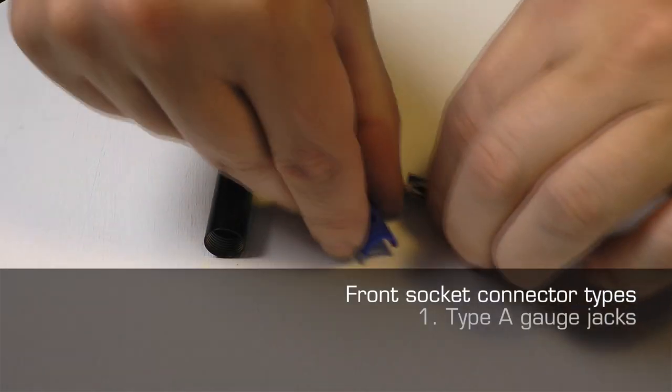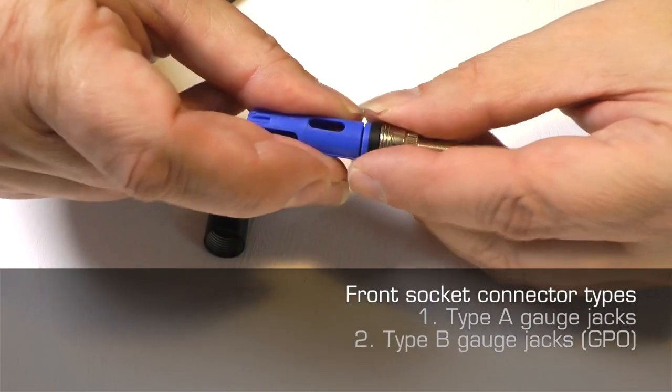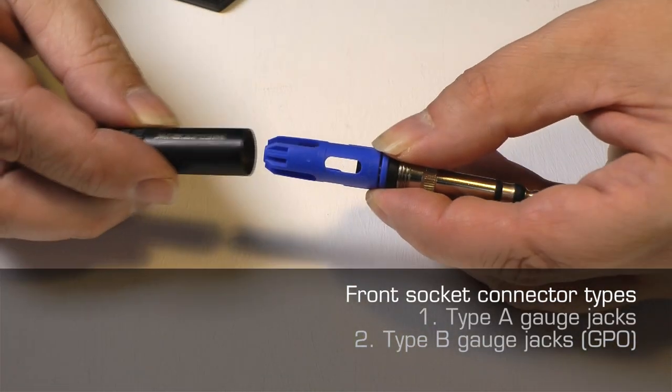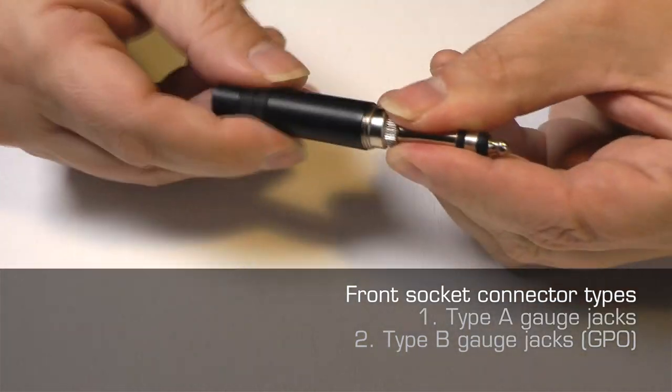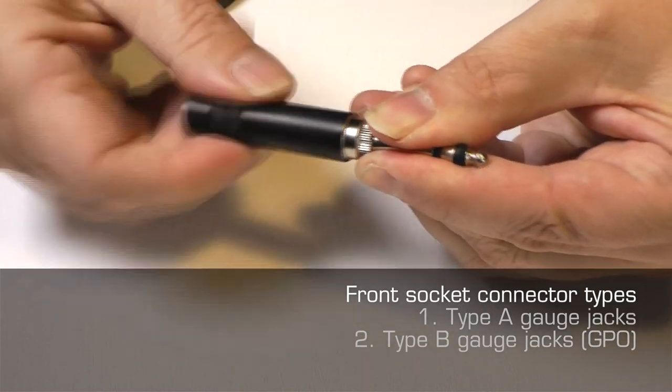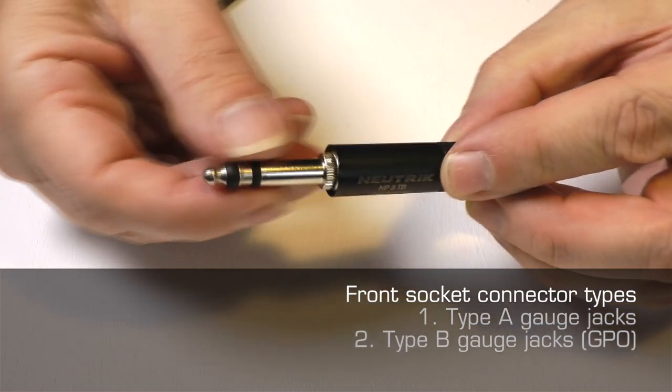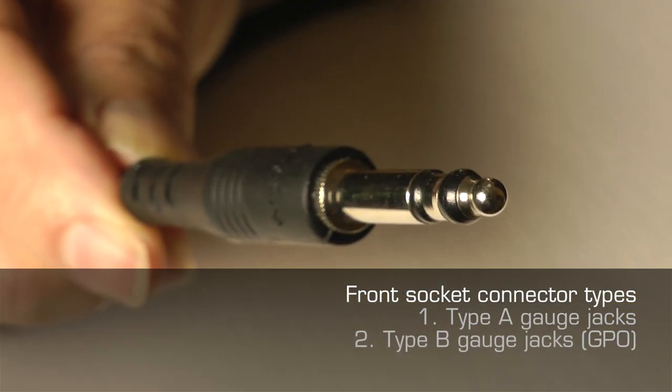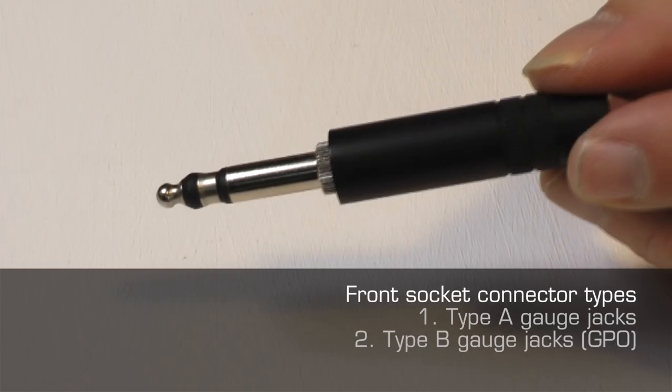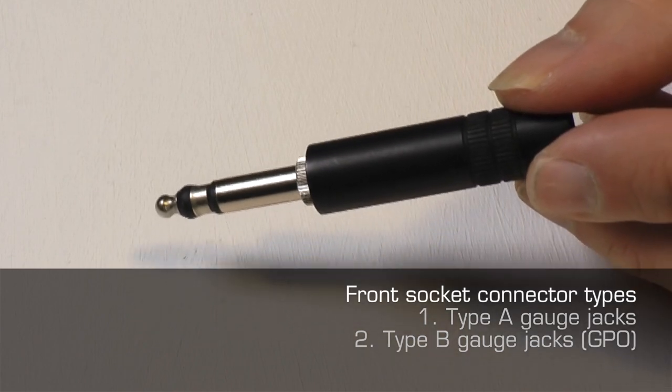Two, B gauge GPO jacks. These connectors were used in the early days of telephone exchanges when connections were made manually by operators. They are very robust and hard wearing. The plug is physically similar to type A but the tip is shaped differently and the construction is generally more robust.